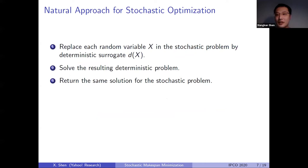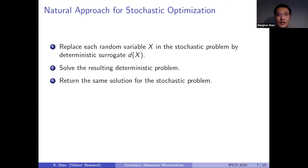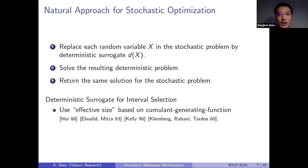Another way to design stochastic optimization algorithms for combinatorial optimization problems is to replace the random variable by some deterministic value, solve the resulting deterministic problem with a known algorithm, and then use the same solution for the stochastic problem. The previous naive approach also follows this roadmap, and one of the most important parts is to find a good deterministic surrogate. In this work, we use the effective size, which is a function based on the moment generating function, also used in the previous load balancing work.